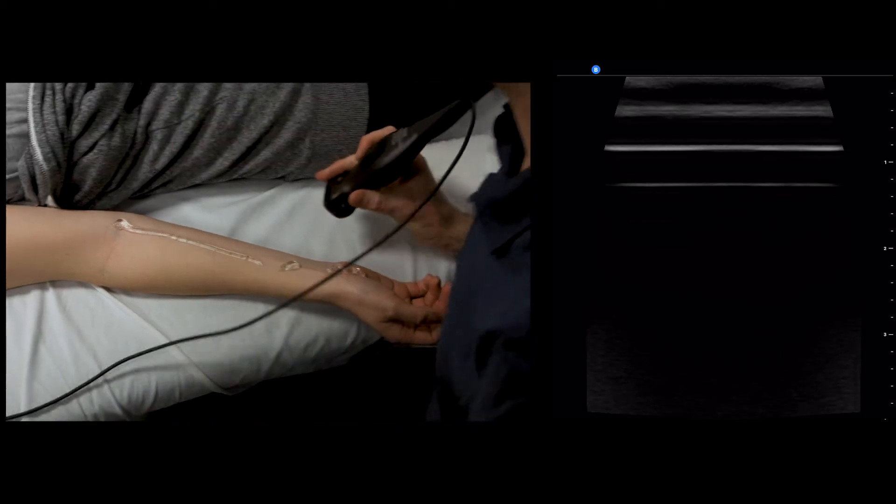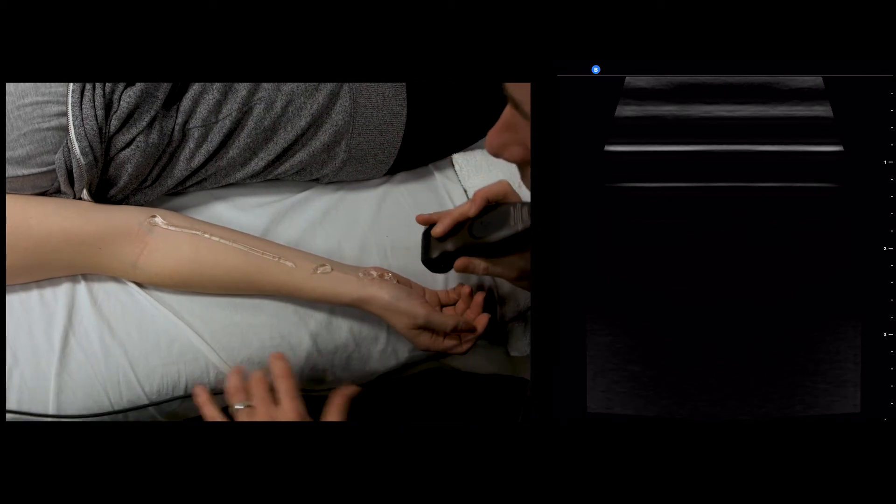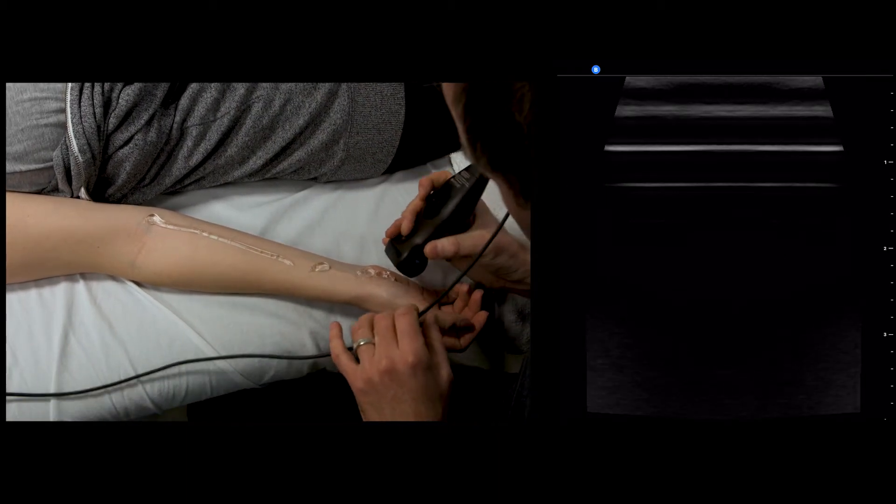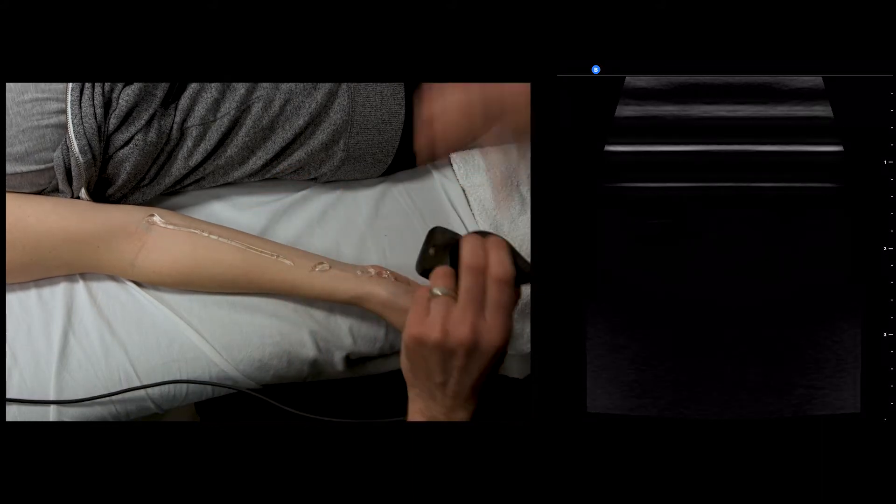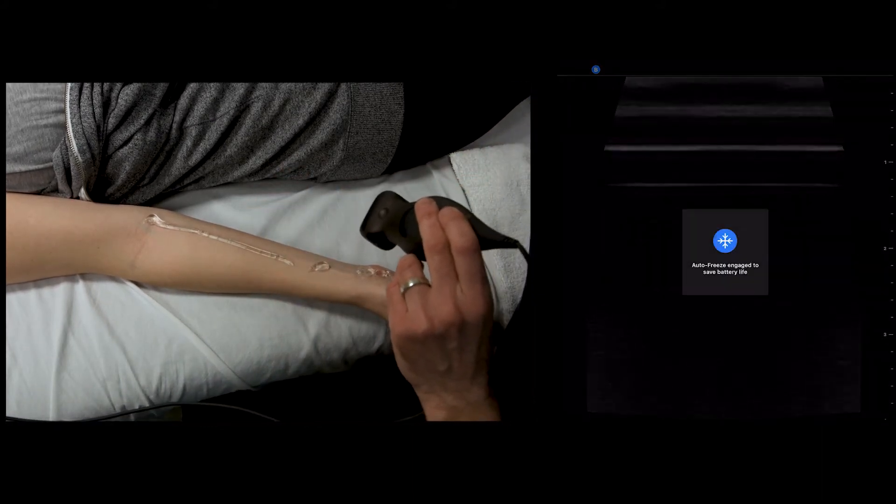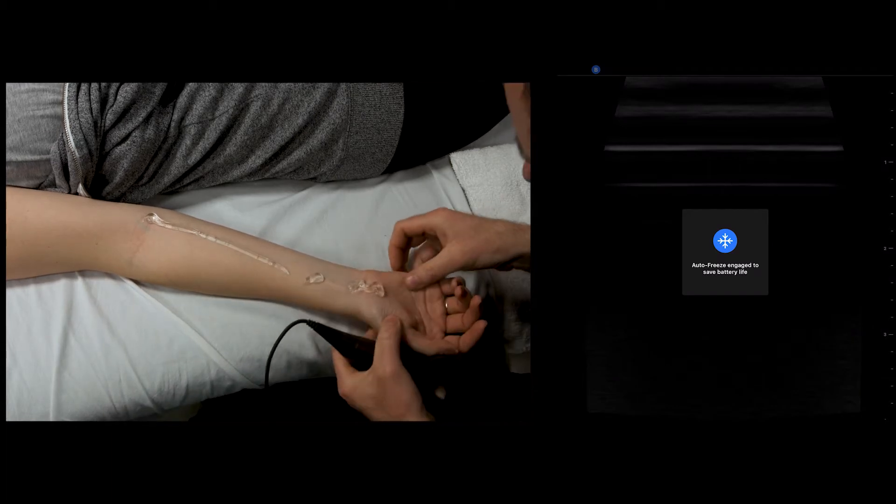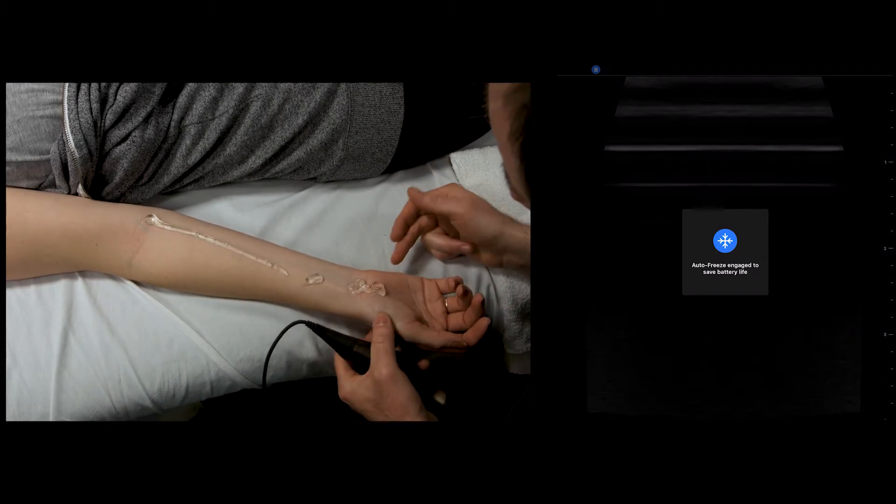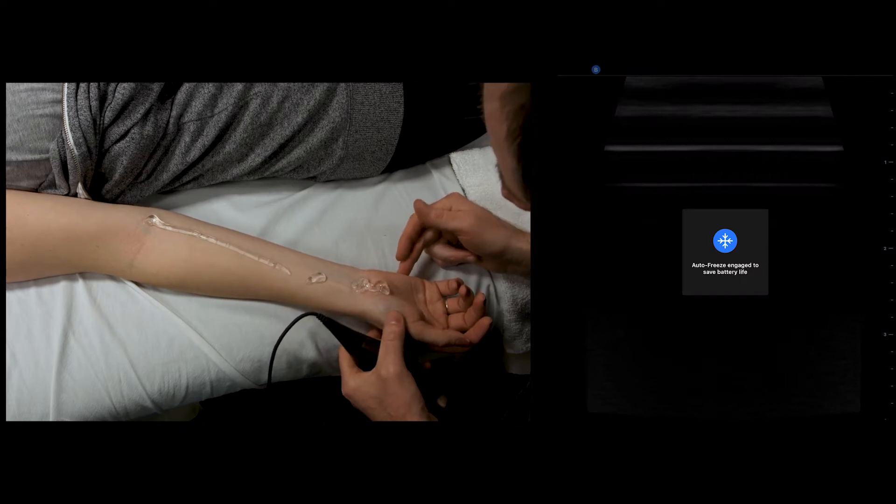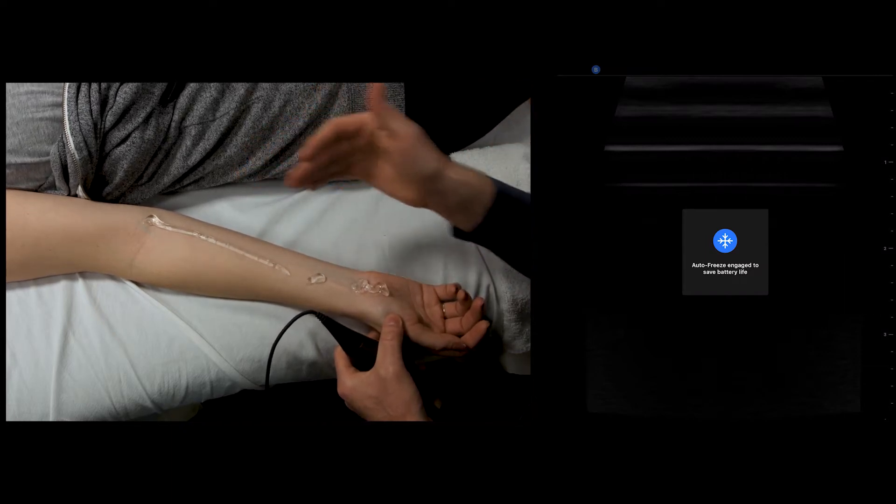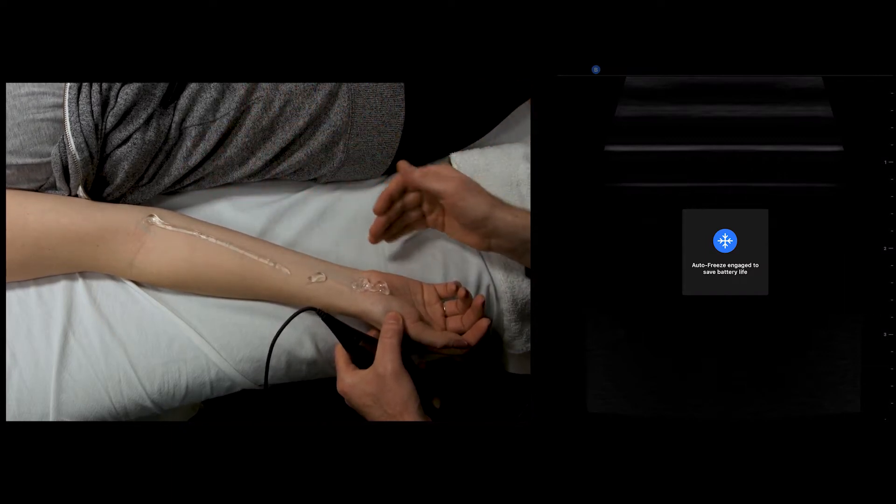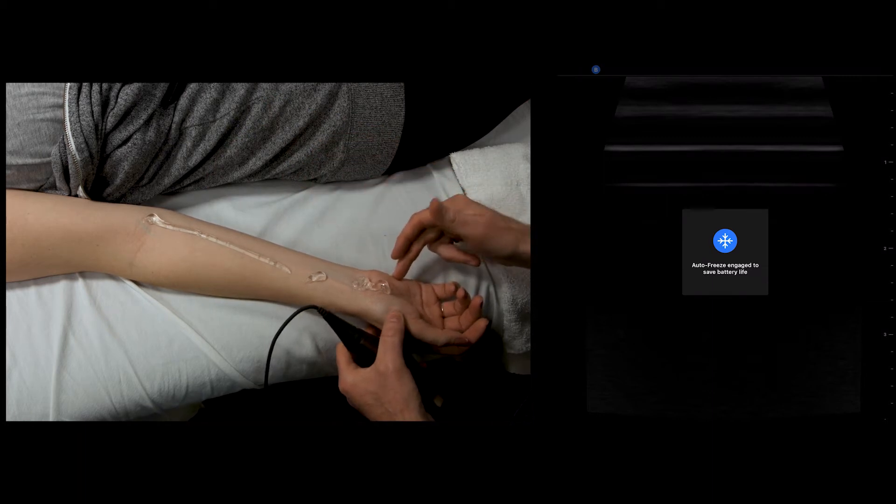This is the median nerve with the Butterfly ultrasound. I've got the median nerve outlined here with a bit of gel on the palm. We are going to look at the median nerve through the forearm, up through the antecubital fossa, and down into the carpal tunnel.